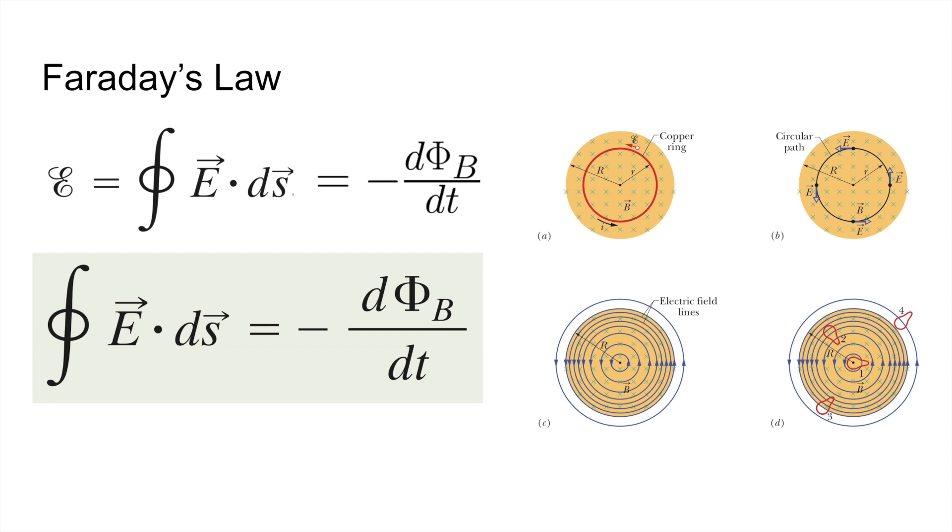Another form of Faraday's law is when we take the closed line integral. The EMF is given by the line integral of the electric field over a certain distance. And if we plug that in into Faraday's law, we get the closed line integral of E ds is equal to negative d phi over dt. This is always true. However, it's only useful in certain configurations because of the great deal of symmetry.